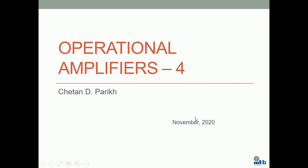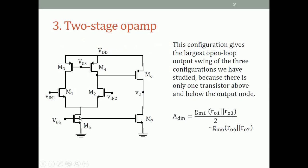This lecture covers the third of three configurations that give a gain of the order of (GM·RO)², which is the two-stage op-amp. It has a first stage that is a simple differential amplifier and a second stage that is a common source stage. The voltage gain is the product of the gain of the first stage multiplied by that of the second stage.